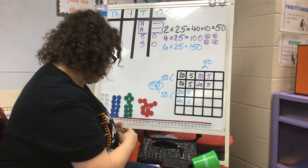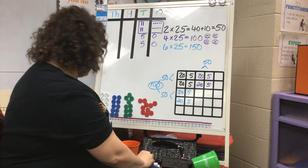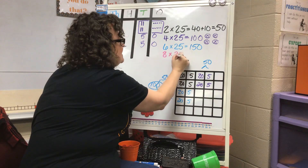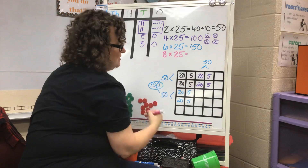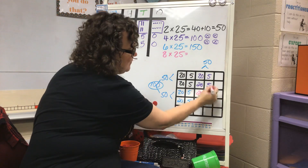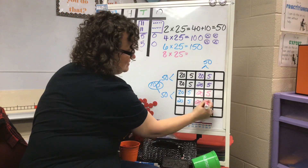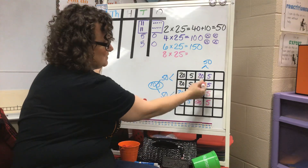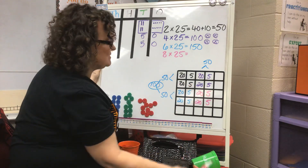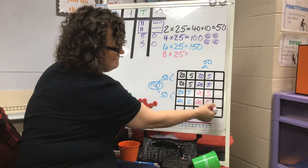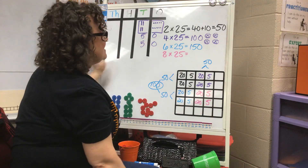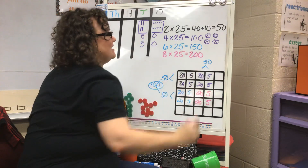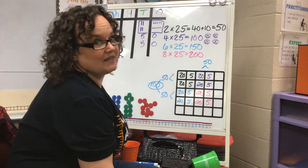One time when I did this number talk with my third grade group, I had one girl who doubled the 4 groups of 25 and went ahead and did 8 groups of 25. Eight groups of 25 on your graph paper would look like this: you'd have 20 eight times, and 5 eight times. And because we had already done 4 groups of 25, she knew that 8 groups of 25 was 200. She was a very clever girl.